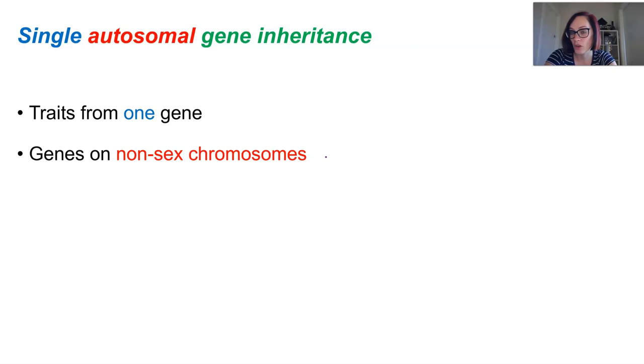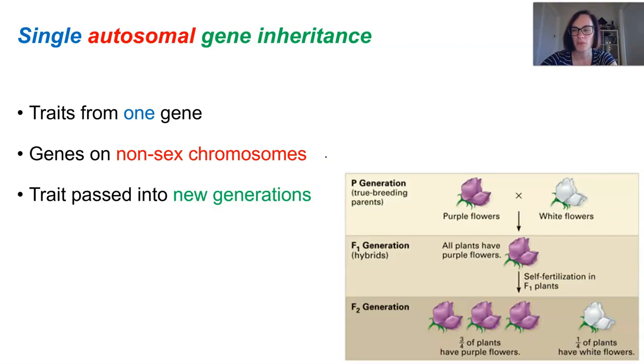Now, without knowing at the time, but what he was studying was single autosomal gene inheritance. So he looked at traits which only required one gene on chromosomes that were not sex chromosomes, and they were being passed from generation to generation. So it's a really simple mode of inheritance, which has been built on quite a lot since, but it was a really good start.